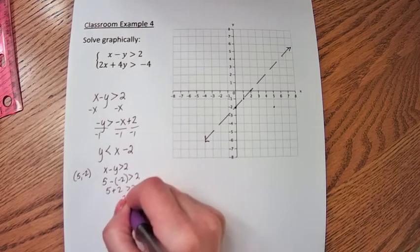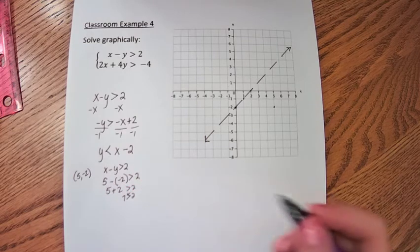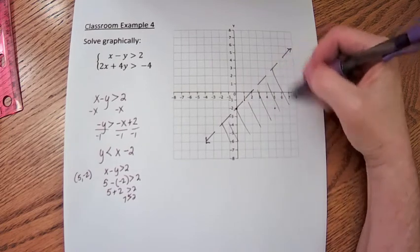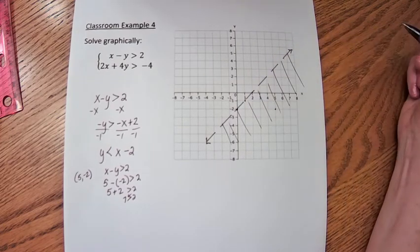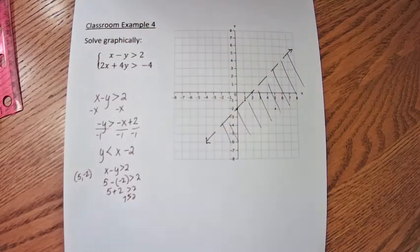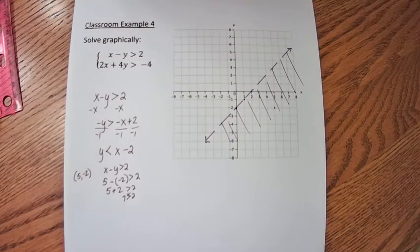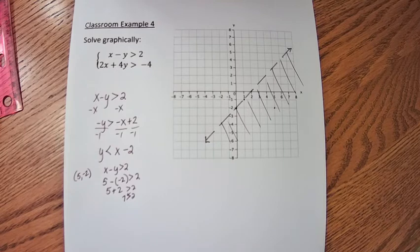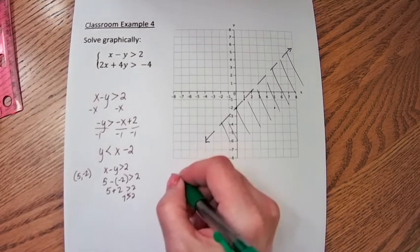I'm putting in a 5 for x and putting in a negative 2 for the y, and the negative of a negative becomes positive. So is 7 greater than 2? Yes it is. Here's the solution region for the first inequality in this system. See, this bracket here says that these two equations are considered together for a solution.